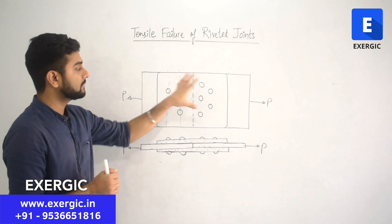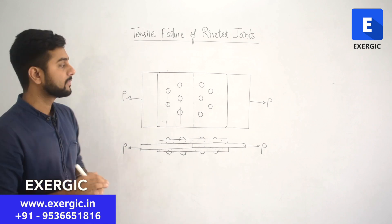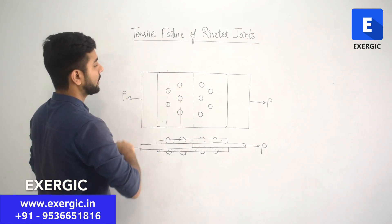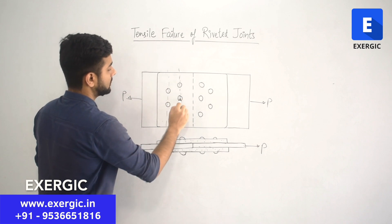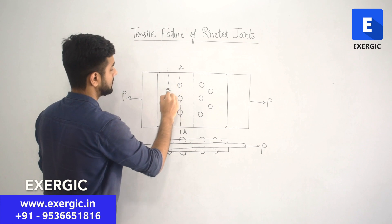Since both the plates have same setup, have same arrangement of rivets, we are just going to focus on any one. You look here. This is let's say section AA. This is section BB.